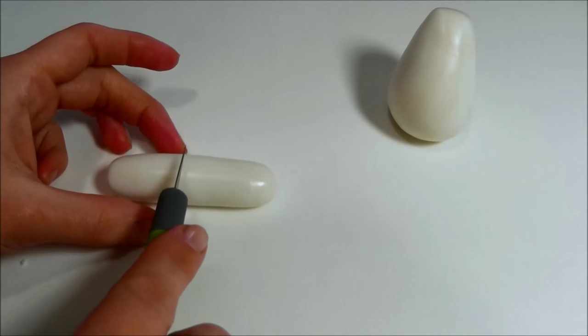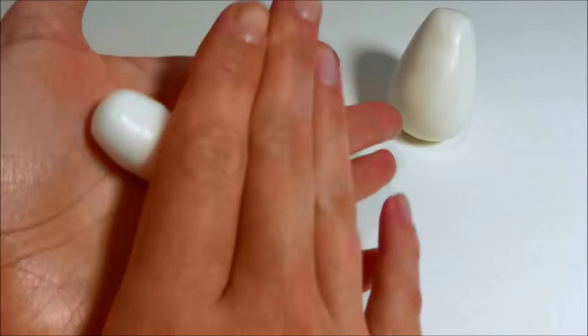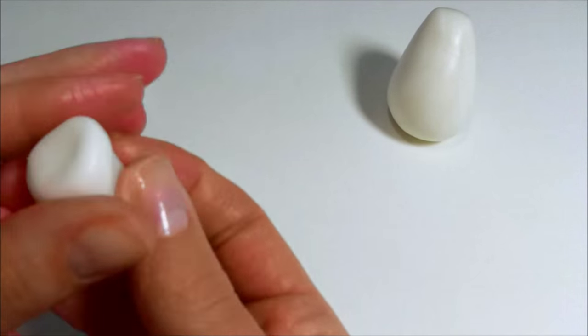To make legs the same size, roll a sausage shape and cut it in half. Then shape each half into a leg with foot.